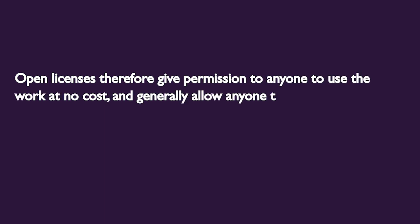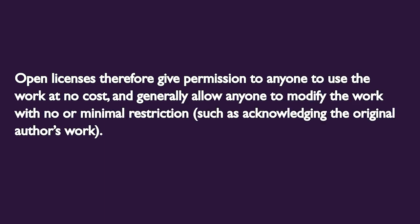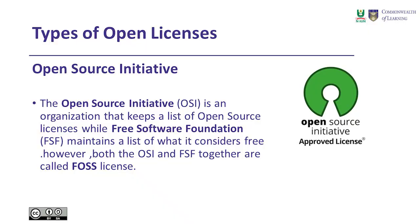Open licenses therefore give permission to anyone to use the work at no cost, and generally allow anyone to modify the work with no or minimal restriction, such as acknowledging the original author's work. Now let's take a look at types of open licensing.